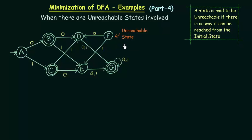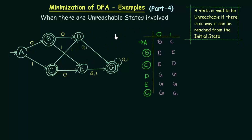Let us see how we can minimize a DFA when there are unreachable states involved. The procedure is very simple. Whenever you have an unreachable state in your DFA and you need to minimize it, the first thing you have to do is just remove that unreachable state and then proceed as you normally would. Here, let me remove the unreachable state F and draw the transition table for this DFA without the unreachable state F.